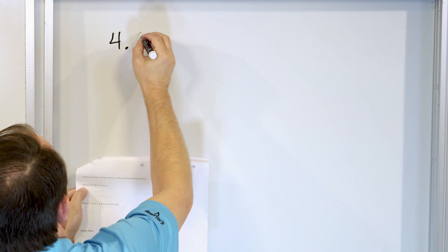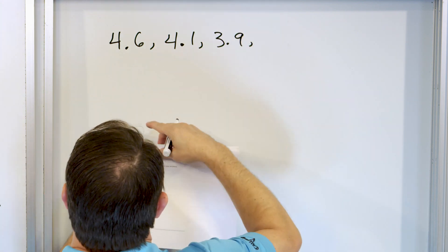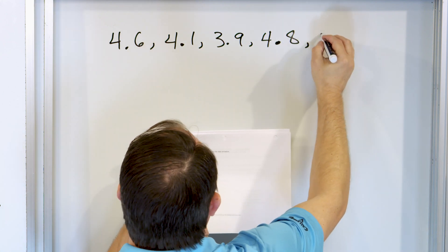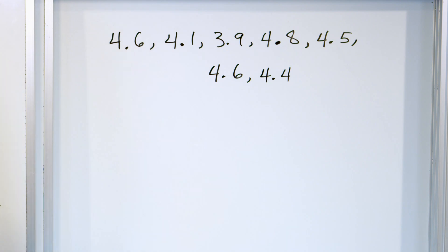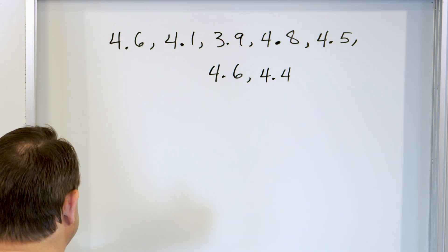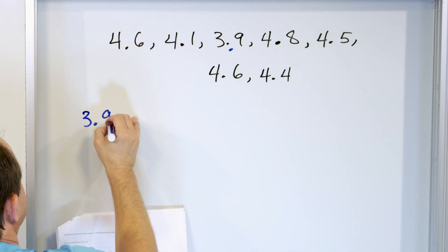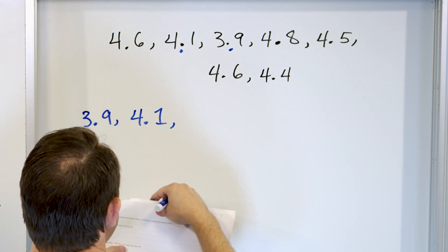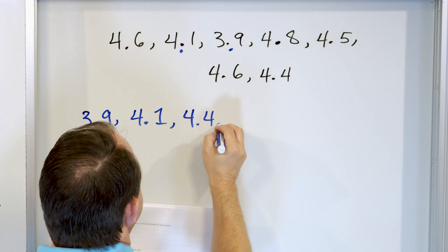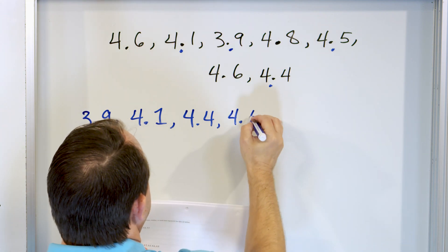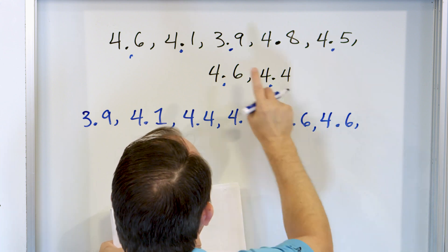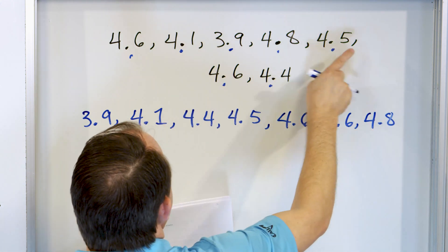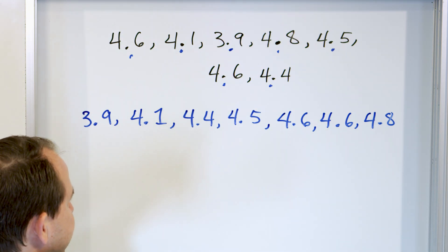Let's take a look at our very last problem. We have: 4.6, 4.1, 3.9, 4.8, 4.5, 4.6, and 4.4. Before we do anything, let's order the data set from least to greatest: 3.9, 4.1, 4.4, 4.5, 4.6, 4.6, 4.8.